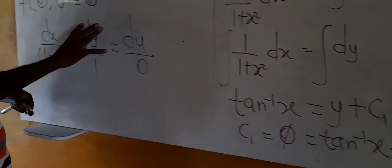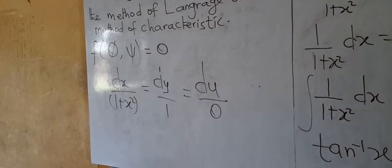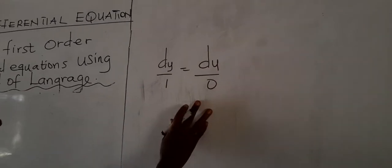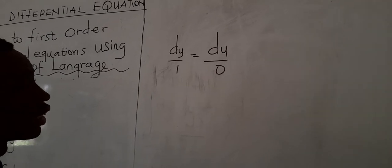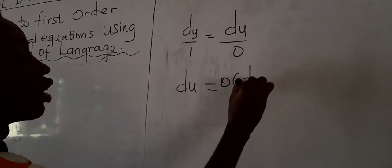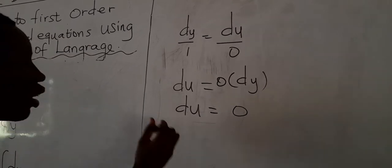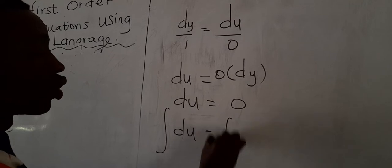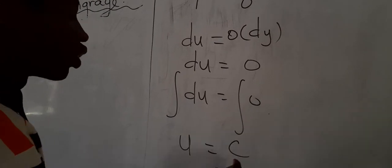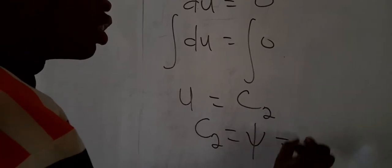Next, we equate dy/1 to du/0. Please note: this does not mean it is undefined — it is a characteristics equation. Cross-multiplying: 0·dy = du, so du = 0. Integrating both sides: u = c2. Therefore c2 = φ = u.